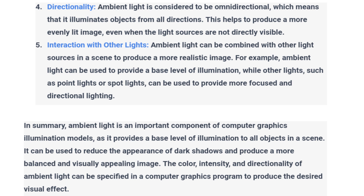Interaction with other lights: Ambient light can be combined with other light sources in a scene to produce a more realistic image. For example, ambient light can be used to provide a base level of illumination, while other lights, such as point lights or spot lights, can be used to provide more focused and directional lighting.